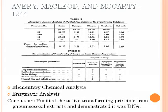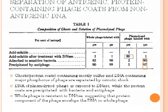Based on these findings, it was speculated that the transforming principle was likely to be DNA, or a factor very closely associated with the DNA molecule in the preparation. Subsequent work by Hershey and Chase was undertaken in later years to demonstrate unequivocally that DNA was the transforming agent.